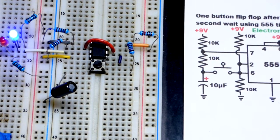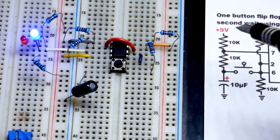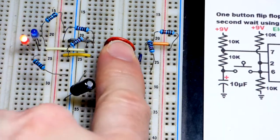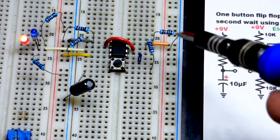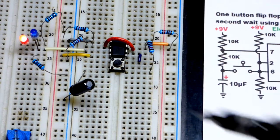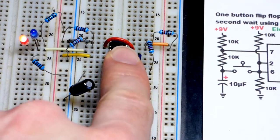When we press the button, so right now the output is low, so actually the capacitor is not charging right now. It discharged to zero volts. We press the button and now the capacitor is charging through those two resistors as I showed.